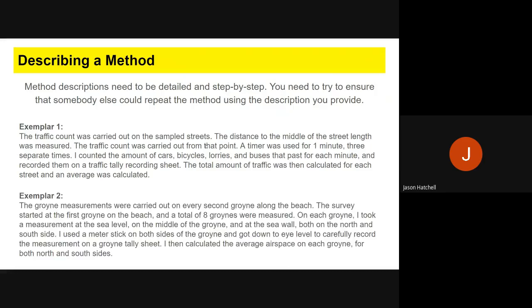Similarly, I've got groin measurements here. I went to every second groin for my sampling—that's systematic sampling. I started at the first groin of the beach, and there were a total of 8 groins measured. So there were 16 groins total, but I measured 8 through systematic sampling. On each groin I took measurements at sea level, at the middle of the groin, and at the sea wall—three specific points, both on the north side and south side.